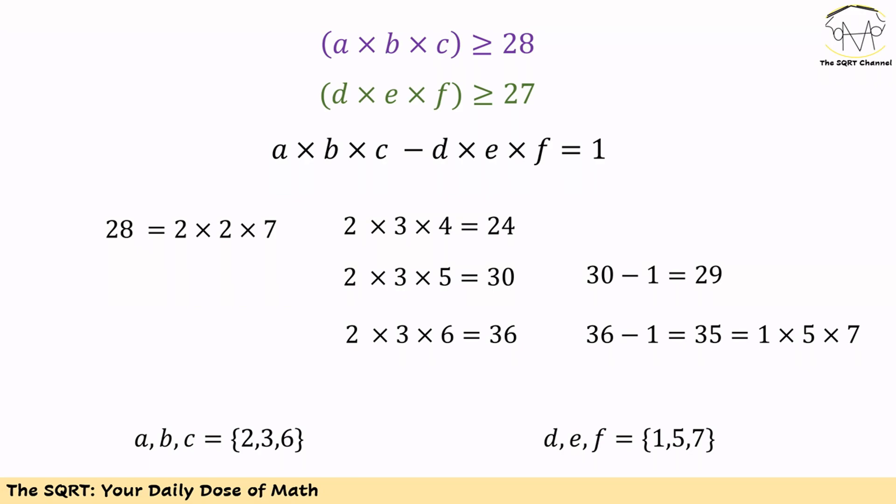Then we move forward and pick 5 for C. Then A times B times C is going to be 30, which is greater than 28. However, D times E times F is going to be 30 minus 1, or 29. 29 is a prime number. You cannot find 3 factors inside it to have for D, E, and F. So that's not acceptable too.